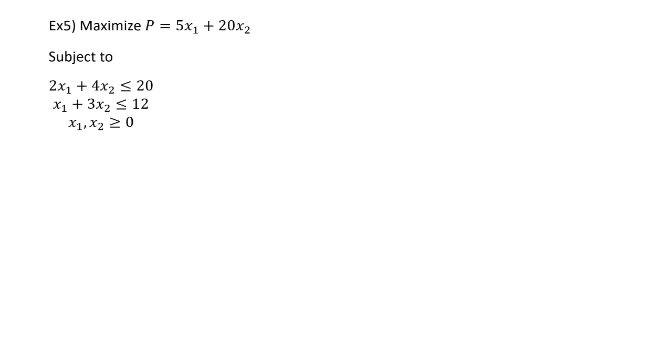Hey everybody, so one last video for one last example for using the table method. Here we have another system of inequalities and first thing that we're going to do is add our slack variables. So we have 2x1 plus 4x2 plus s1 equals 20 and then x1 plus 3x2 plus s2 equals 12. Lastly, x1, x2, s1, s2 all greater than or equal to 0.